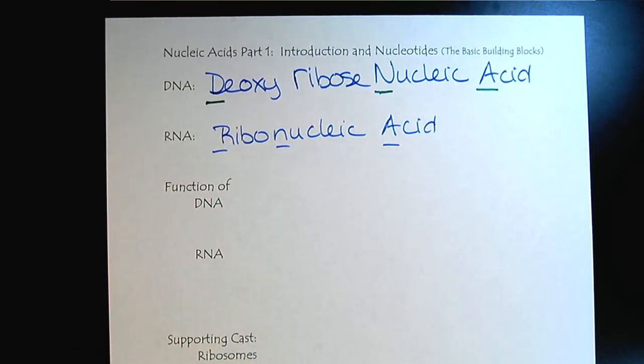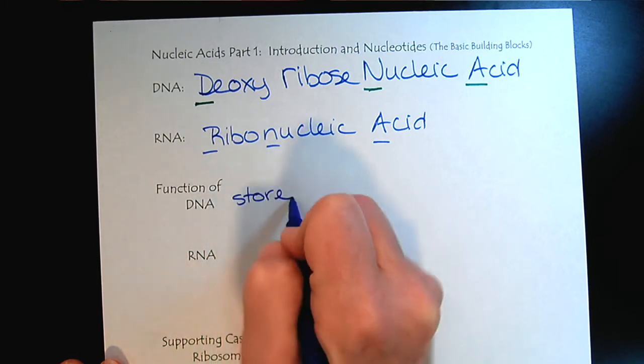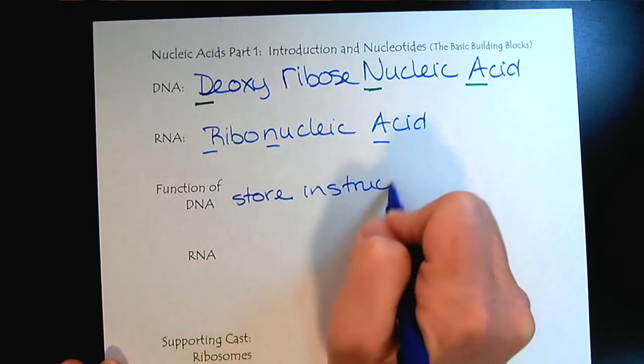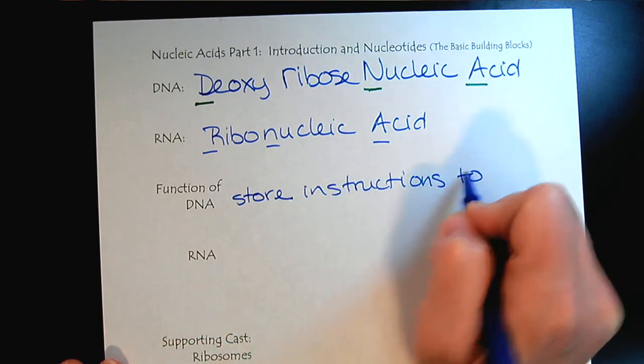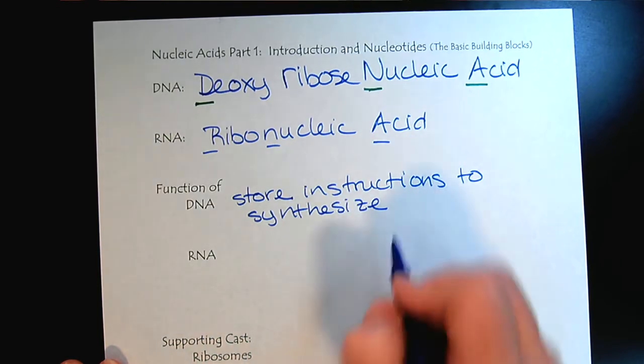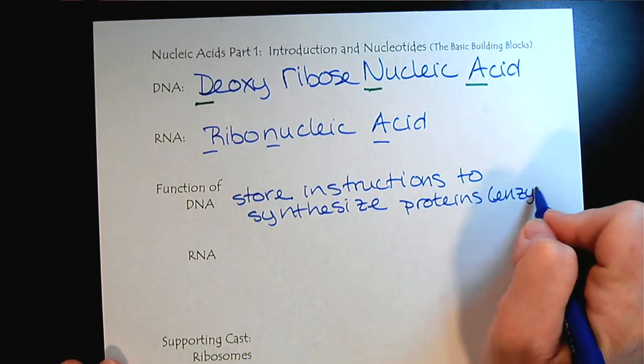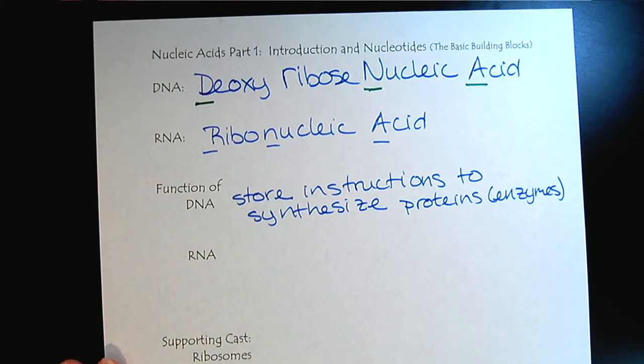They work together and have similar functions. DNA is the library - it stores instructions for making proteins. And when we hear the word protein, while proteins have many functions, we're going to really think about their role as enzymes. The enzymes that are activated within a cell give it its personality and character.